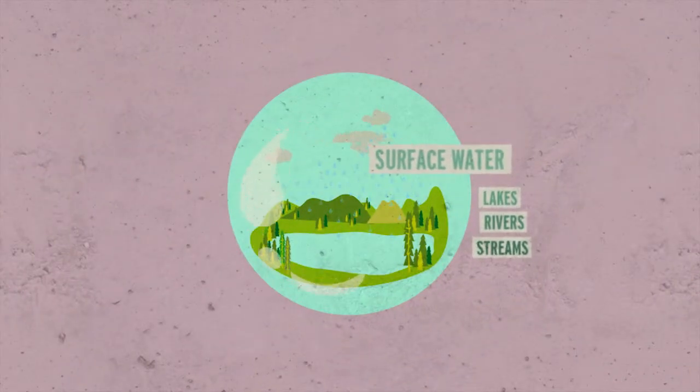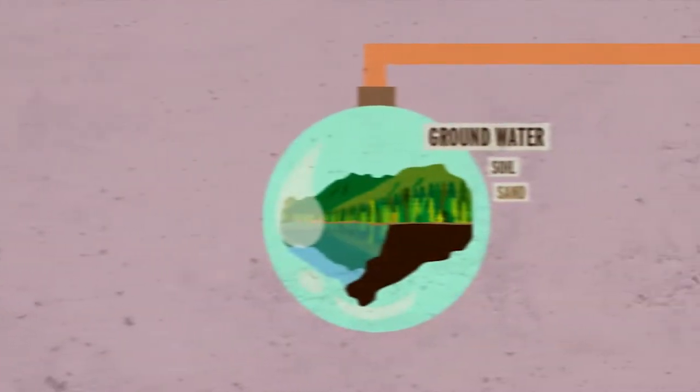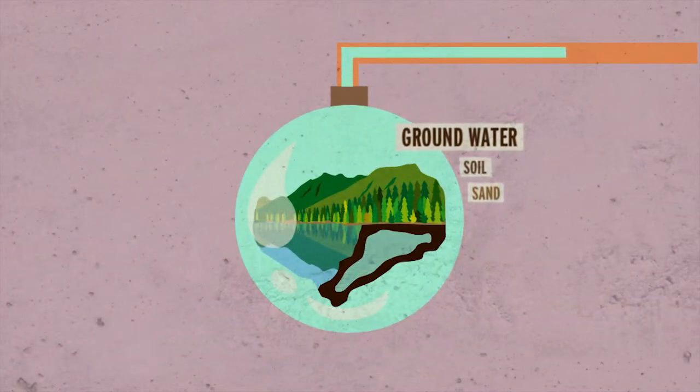Surface water, which collects above ground in lakes, rivers, and streams. And groundwater, water that saturates soil and sand underneath the ground.